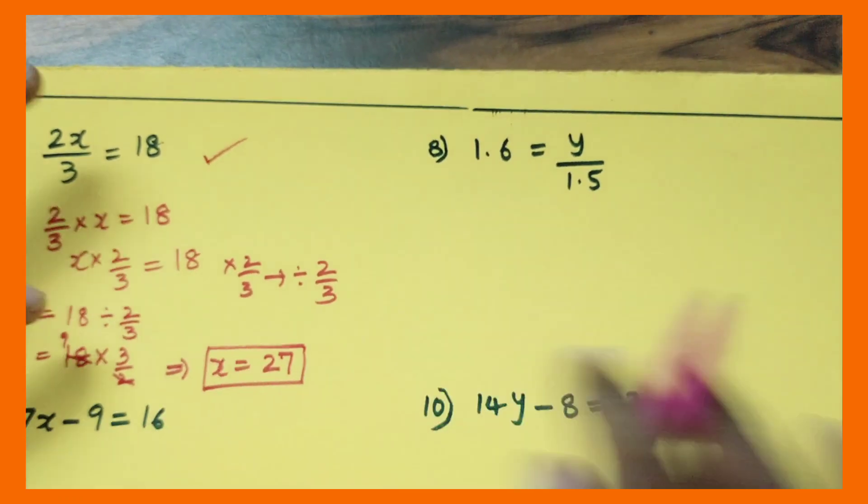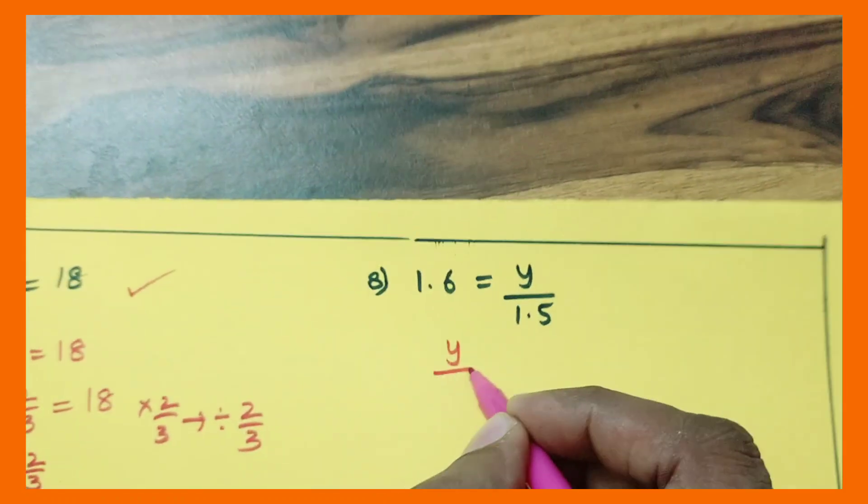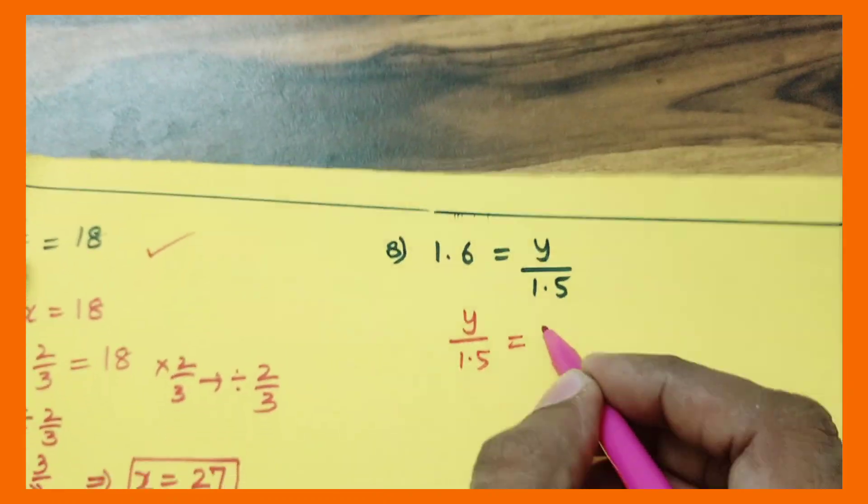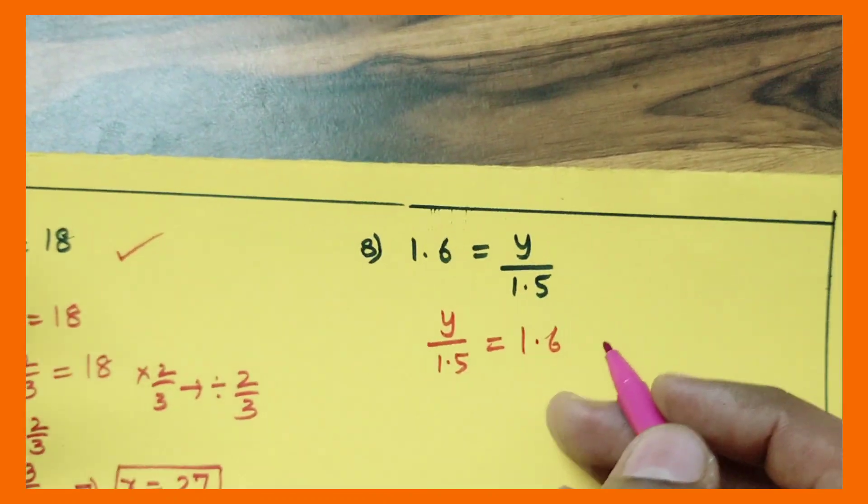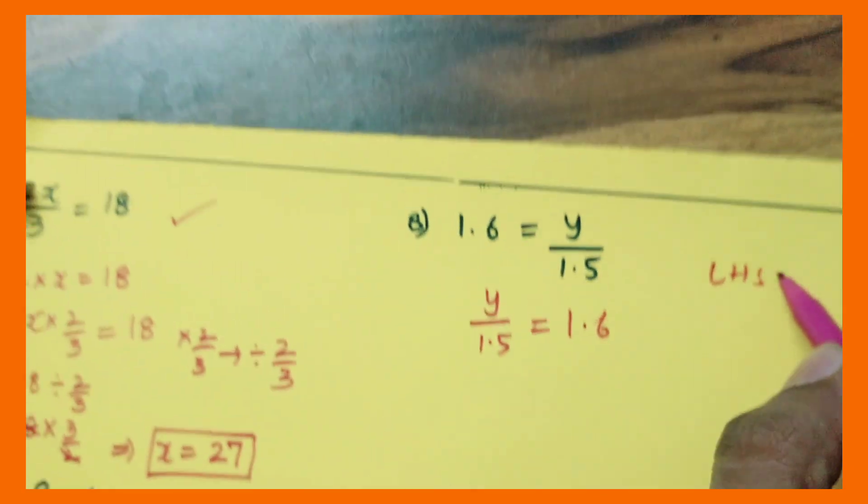Now let us go to the next example. Next sum: y by 1.5 is equal to 1.6. Again in this question, they are teaching you that you can take LHS is equal to RHS and RHS is equal to LHS.